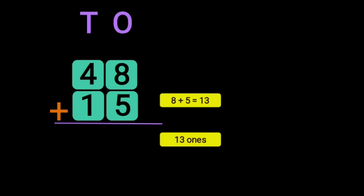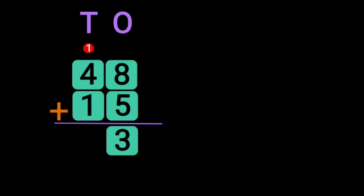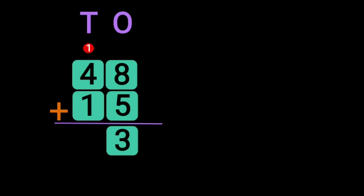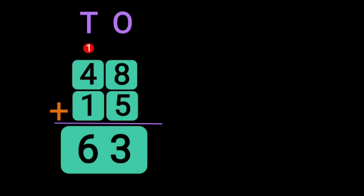13 1's can be regrouped as 1 ten plus 3 ones. Write down the 3 in the 1's place and take the 1 ten as a carry over to the 10's place. Next, begin the addition of the numbers in the 10's place: 1 plus 4 gives you 5, then 5 plus 1 gives you 6. So the sum of 1 plus 4 plus 1 in the 10's place gives you 6. The sum of 48 plus 15 is 63.